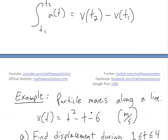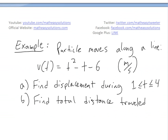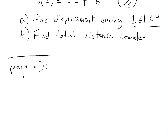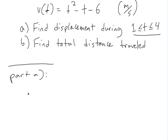Now let's look at an example to illustrate this net change theorem. A particle moves along a line with velocity function V(t) = t² − t − 6, given in meters per second. Part A says find the displacement during the time T from one to four seconds. Part B says find the total distance traveled during this time period.